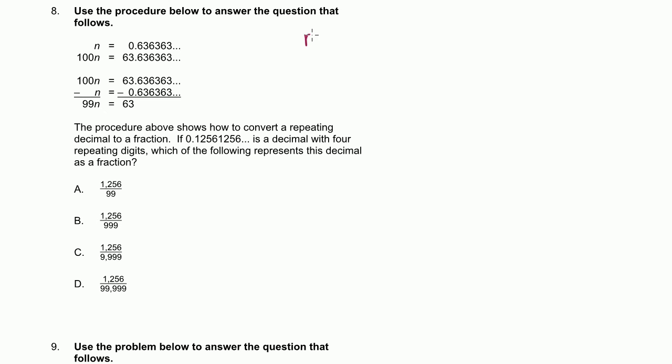You say n, or we could just do exactly what they did there, is equal to 0.1256, 1, 2, 5, 6. And then we could multiply that, and you could even pattern match. Here we had two digits repeating. They multiplied it by 100. And 100 has two zeros. Here we have four digits repeating, so we're going to multiply it by something with four zeros. So we'll have 1, 2, 3, 4. There's our four zeros. So that's 10,000n is going to be equal to what?